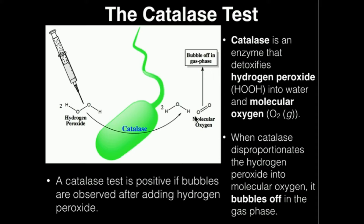When catalase disproportionates — which is just a type of reaction — hydrogen peroxide into water and molecular oxygen, it turns out the oxygen is actually a gaseous molecule, and it will actually bubble off.